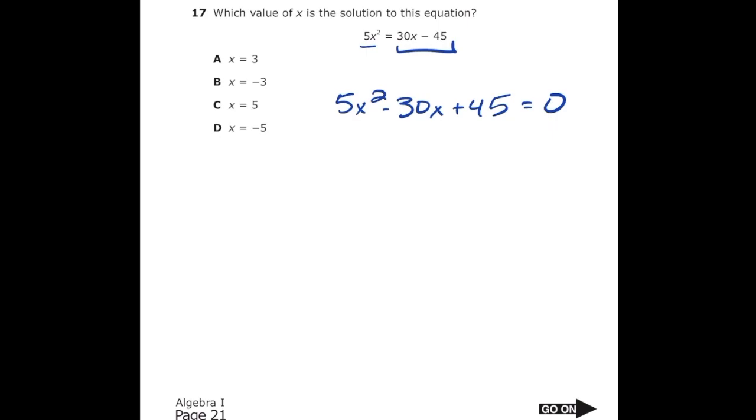So now we can start factoring. I notice that I can divide out a 5 from every single term. So I'm going to take my 5 out and then in parentheses I'm still going to have x squared minus 6x plus 9. Next inside the parentheses I have a trinomial so I can go ahead and factor this out into two sets of parentheses. I need two numbers that multiply to positive 9 and add to negative 6. If you think about that for a second you should end up getting negative 3 and negative 3 because they multiply to 9 and add to negative 6.